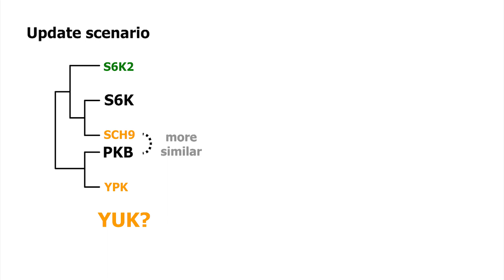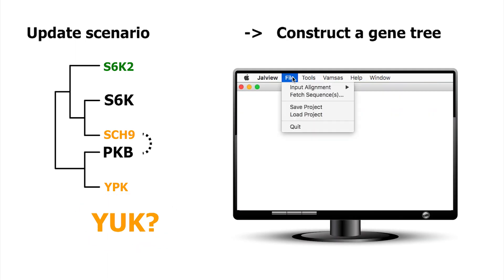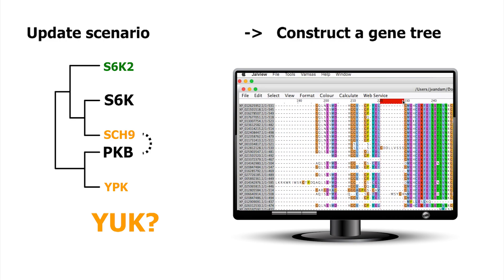We also see that SCH9 appears to be more similar to PKB. Could SCH9 be an ortholog of PKB? And where does this new yeast kinase fit in? We need to construct a gene tree to find out.